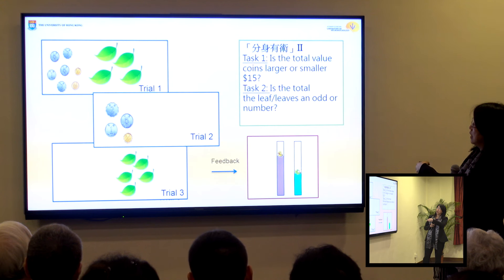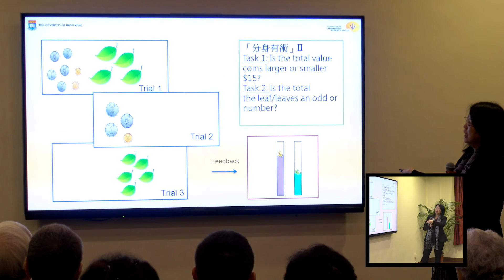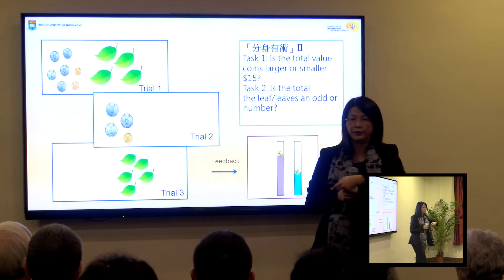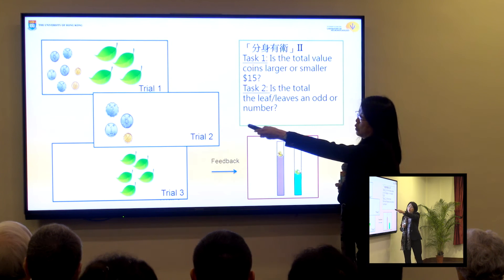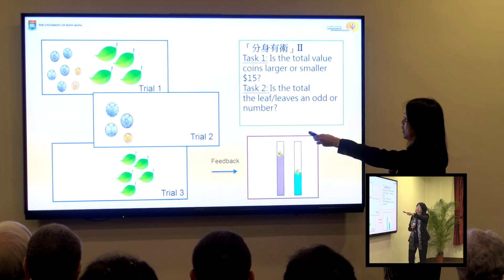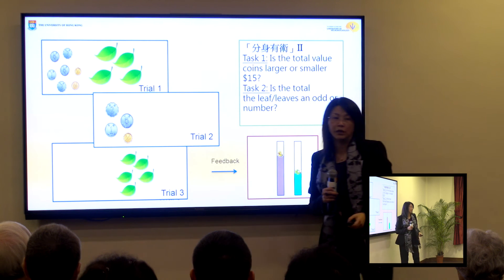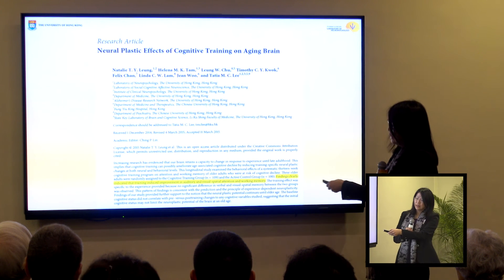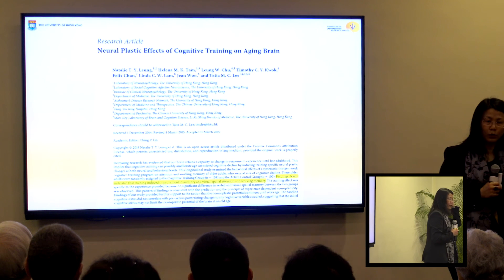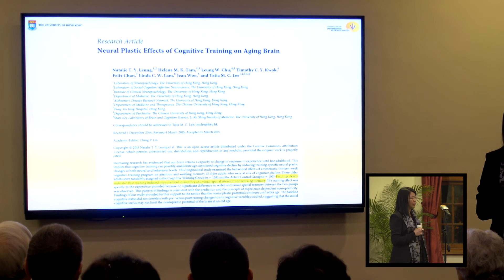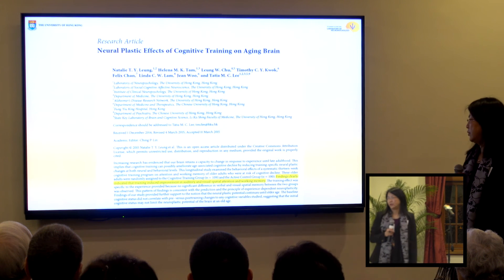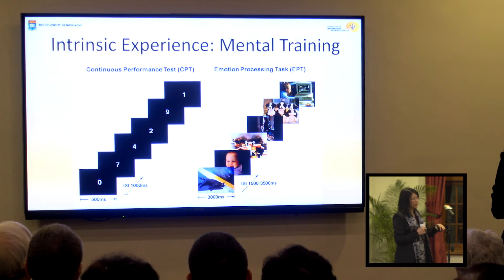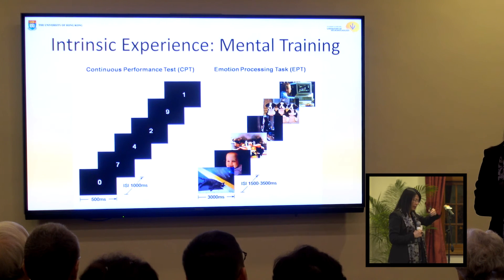One example is a divided attention task where subjects attend to the amount of money shown while also counting the number of leaves — deciding if the amount is over $15 while simultaneously determining if the number of leaves is odd or even. We found that with cognitive training over 13 weeks, auditory and visual-spatial attention as well as working memory improved.